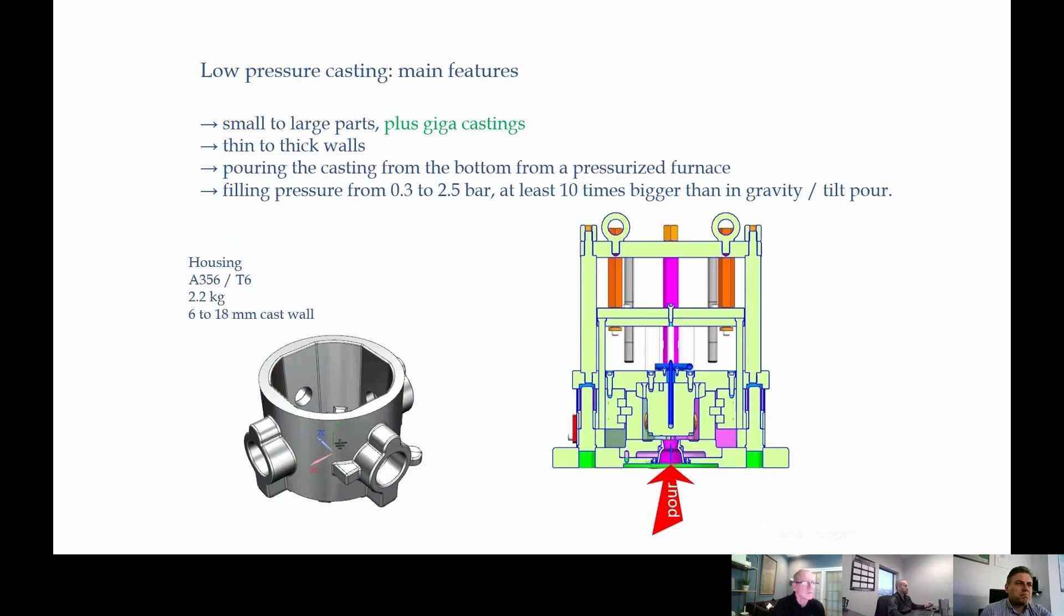This pressure can be bigger, not only to fill the part but to push hard the aluminum inside, thus to feed the part much better than gravity. Actually it is at least 10 times higher than on gravity, because we usually use 0.3 to 2.5 bar for low pressure casting.